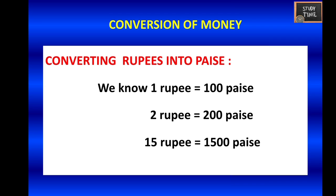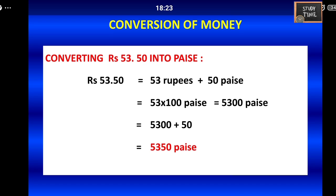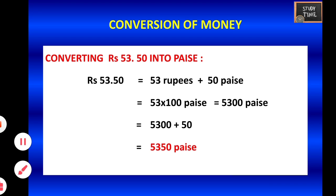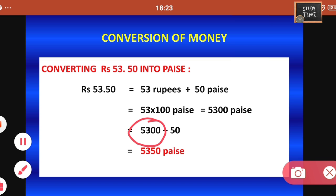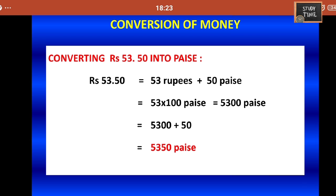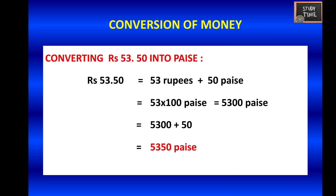Next we are going to see conversion of money — how to convert rupees into paise and paise into rupees. We know that 1 rupee equals 100 paise, 2 rupees equals 200 paise, 15 rupees equals 1500 paise. For example, to convert rupees 53.50 into paise, multiply 53 by 100 to get 5300, then add the 50 paise already present, giving 5350 paise.